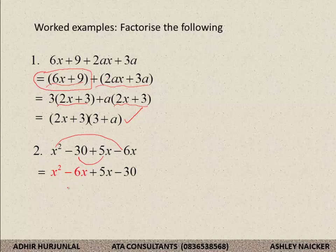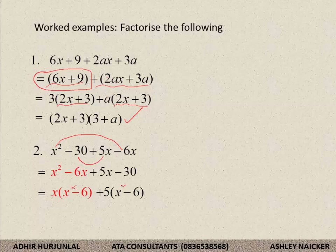Look at the portion in red — I want to take out common factor. My common factor here is x. In the black, my common factor is 5. I take out x and I am left with x minus 6. If I take out 5, I am left with x minus 6. The moment I do this, you see this bracket is exactly the same as that bracket, which means I remove x minus 6 as common factor and I am left with x plus 5. Your final answer is x minus 6 into x plus 5. Understand the concept of grouping. Allow your lecturer to explain if there are any questions.